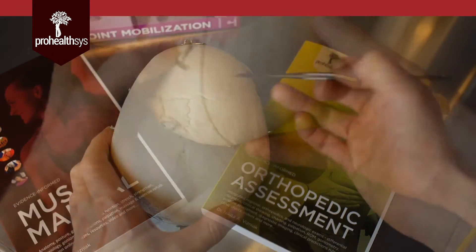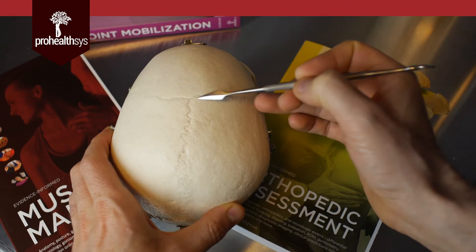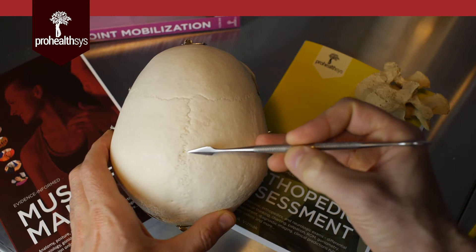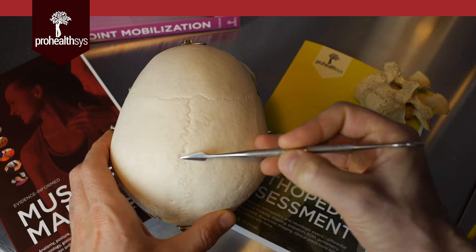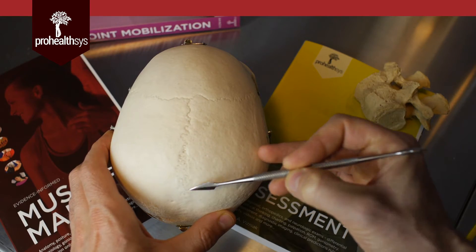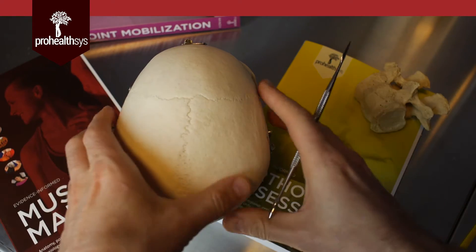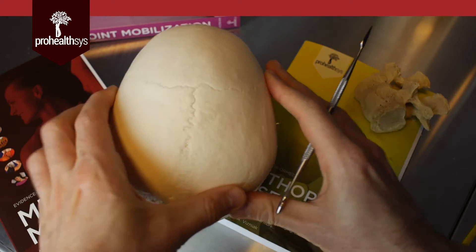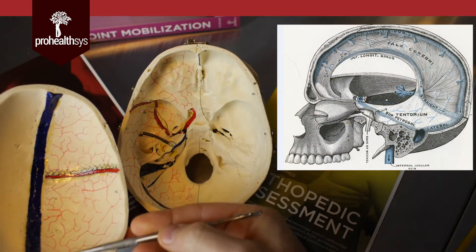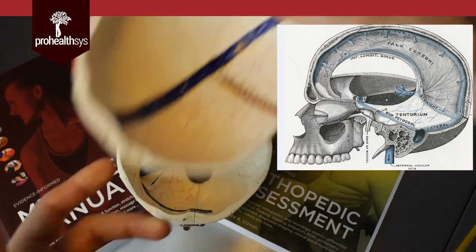If we flip the skull around, we can see the coronal sinus running through this way, and the sagittal sinus running back, and we can really see the interdigitation all the way down on what it looks like on real bone. If we peel back and take the skull cap off, we can see the space for the superior sagittal sinus.